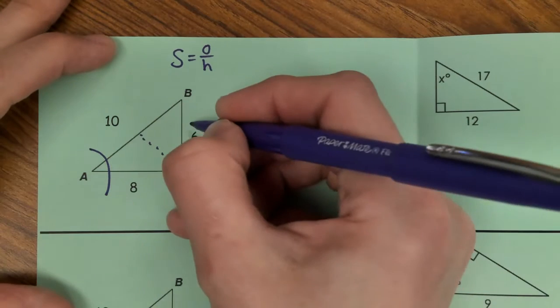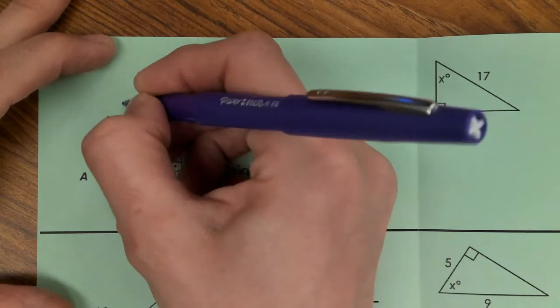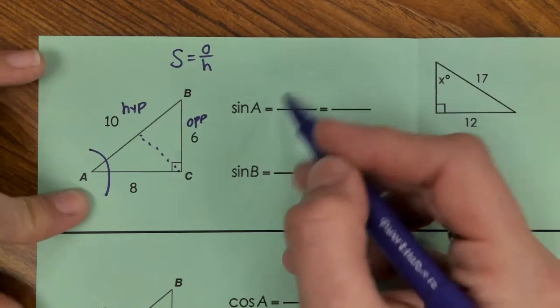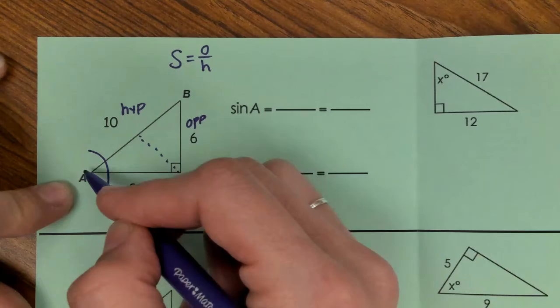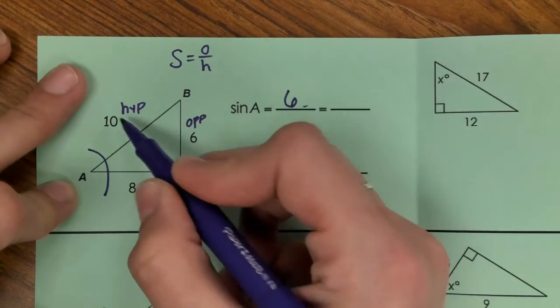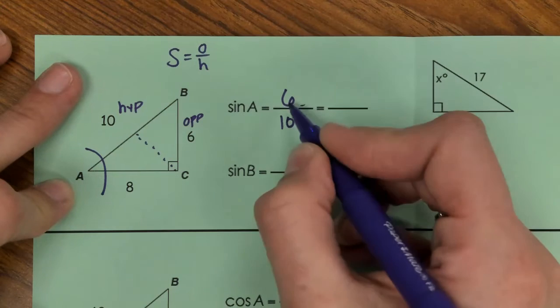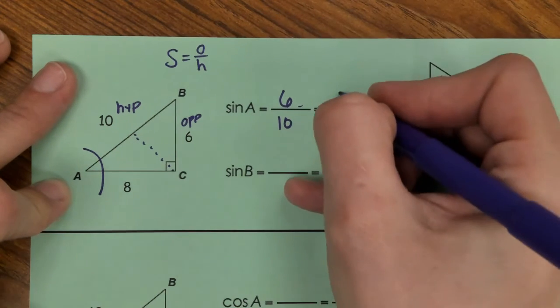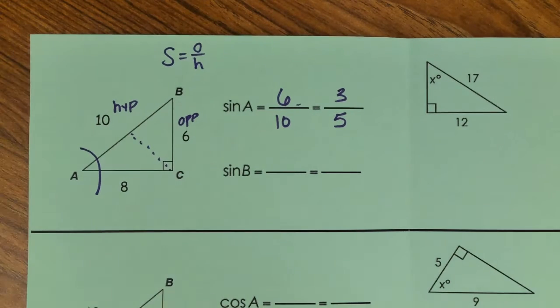Opposite of the angle. Now I'm not writing the words in for a reason—this time we're going to have to simplify. Here, opposite on top is going to be 6, hypotenuse will be 10. We simplify this, divide each one by 2, and we wind up with 3 over 5. This is kind of just a quick rundown of setting up the ratios again.